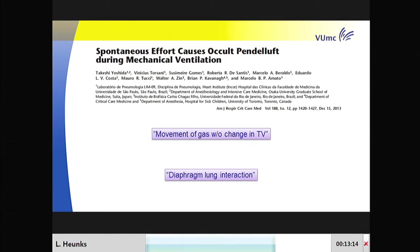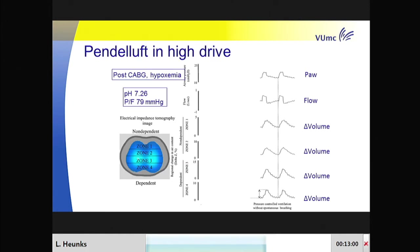That's nicely demonstrated by this fantastic study from Toronto by Yoshida, who looked at pendeluft—defined as the movement of gas without a change in tidal volume—which tells you something about diaphragm-lung interaction. He studied a patient after CABG with severe hypoxemia, pH 7.26, high respiratory drive, and PF ratio of 97. They used electrical impedance tomography to study changes in tidal volume in specific regions of interest: zone 1, zone 2, zone 3, and zone 4.